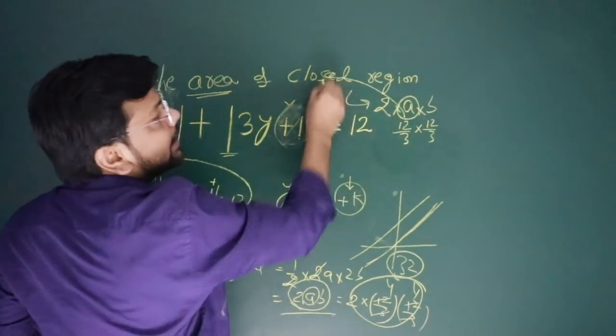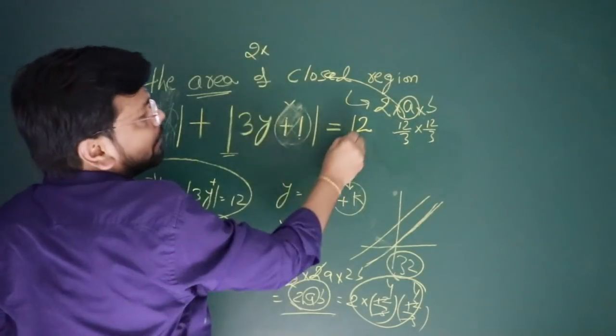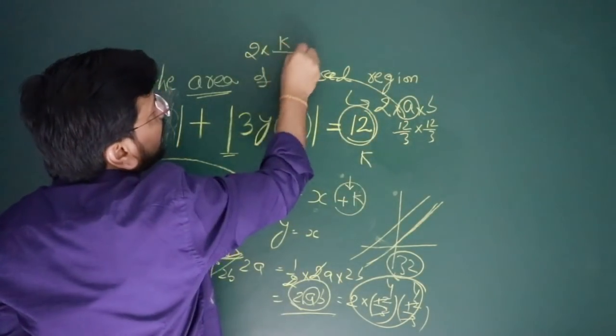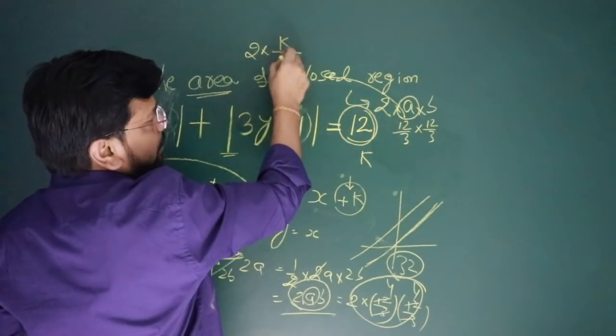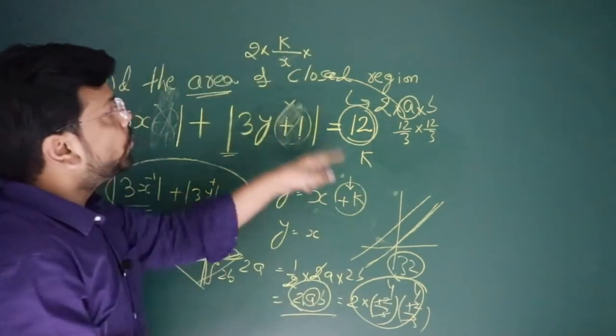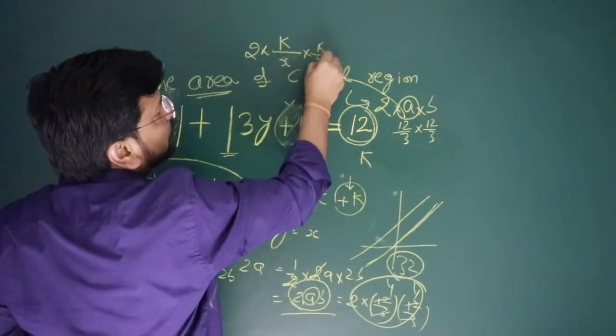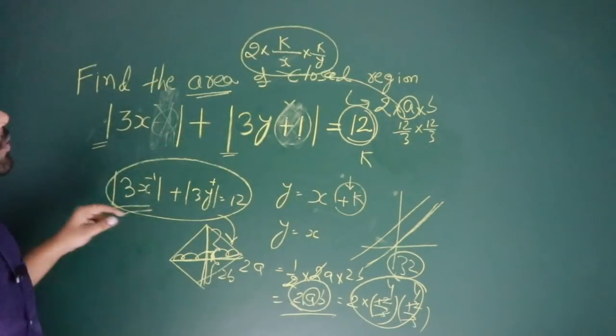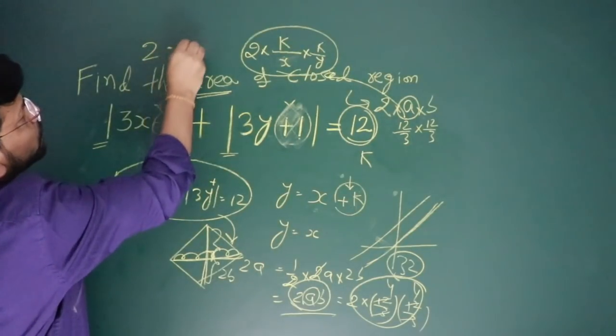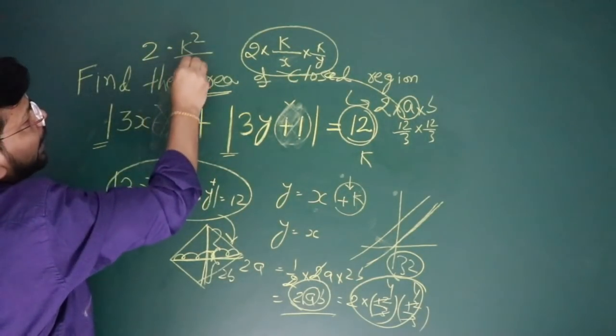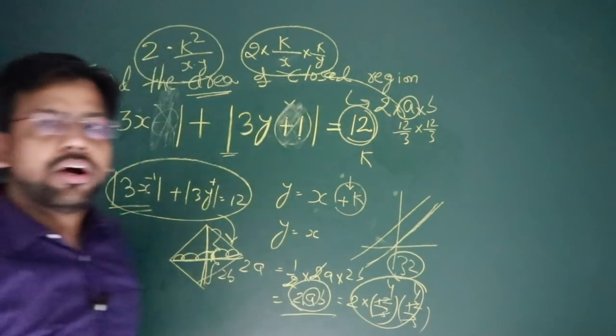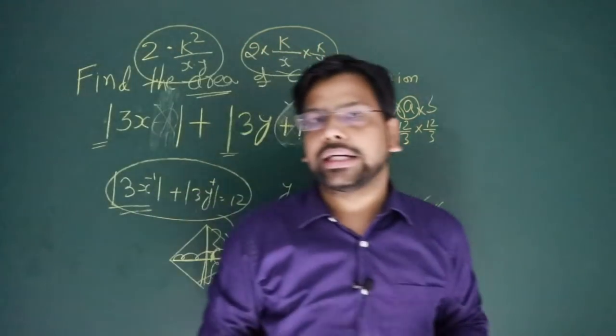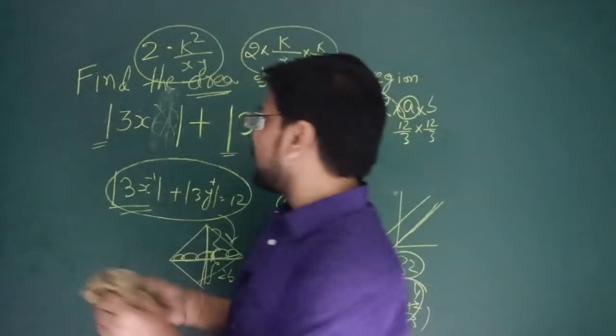Now what is a in the actual meaning? a is k divided by the coefficient of x. The answer is 2 × k² divided by the product of x and y coefficients. This is the answer for any such question. It hardly takes 4-5 seconds.